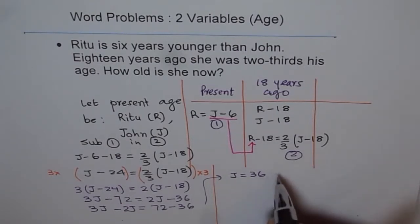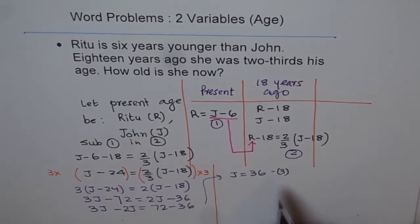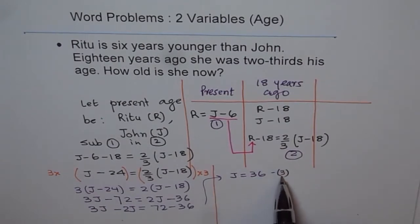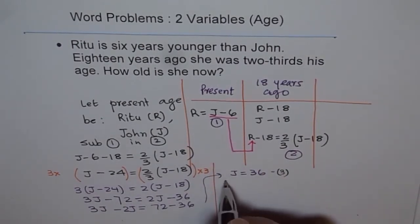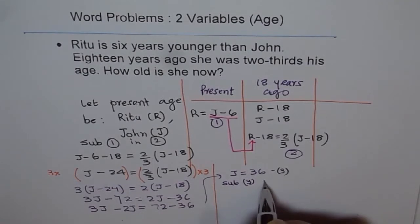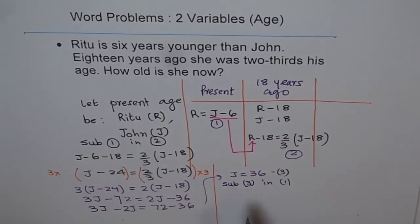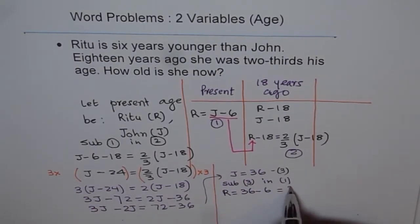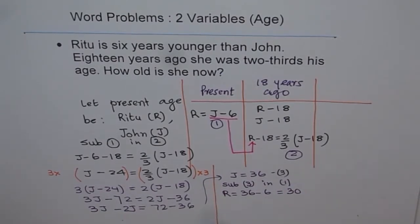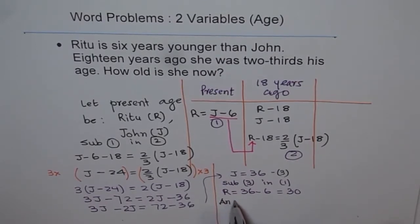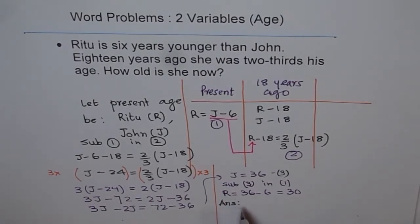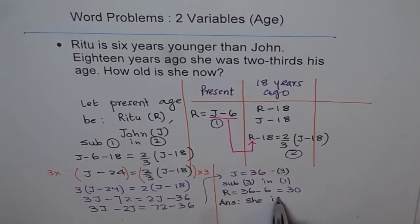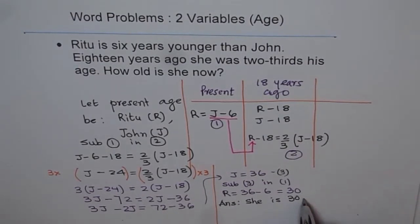Now to find Ritu's age, we substitute J = 36 back into equation one: R = J − 6 = 36 − 6 = 30. So the present age of Ritu is 30 years old.